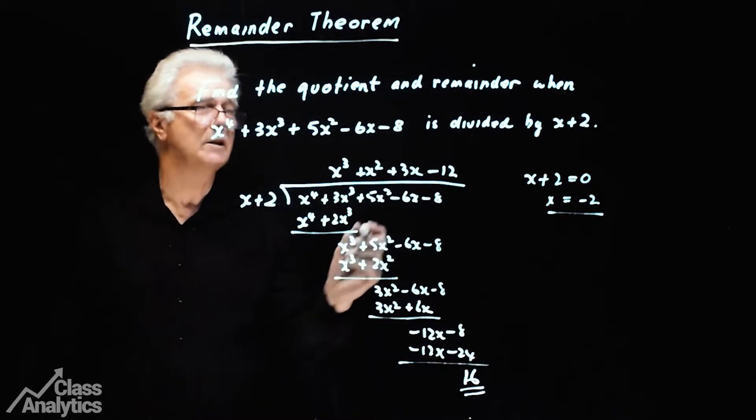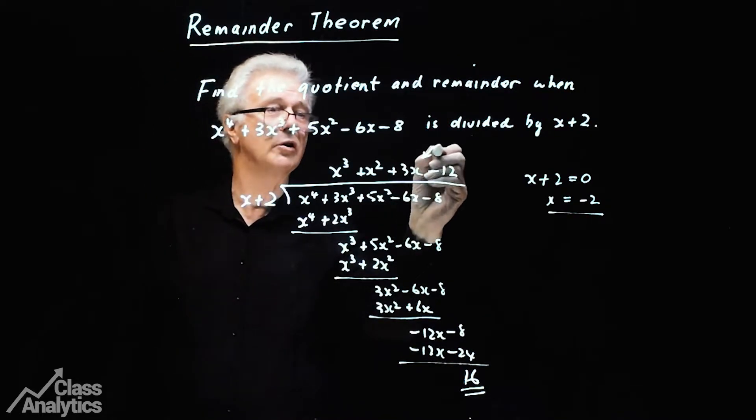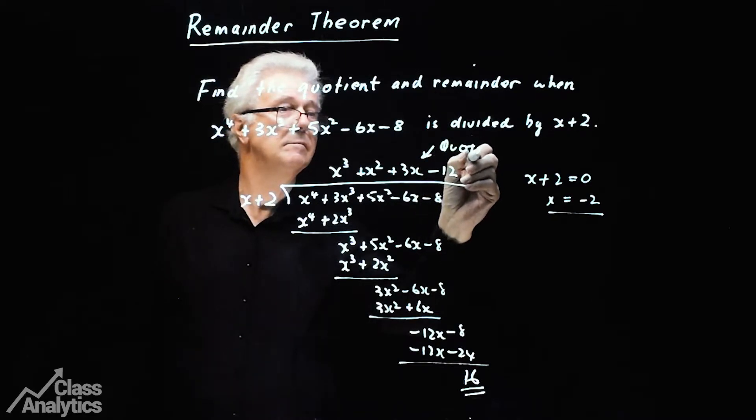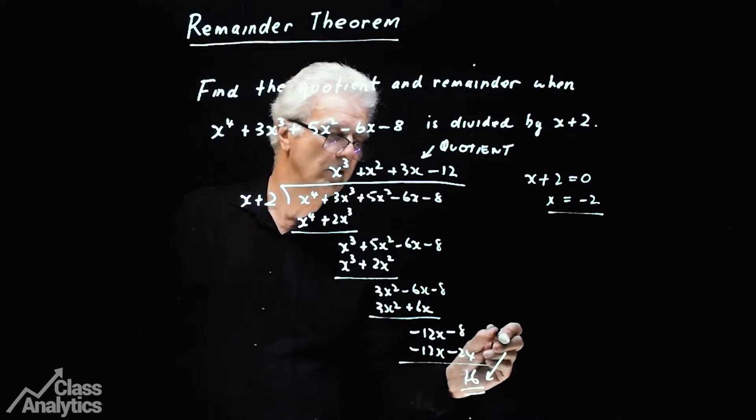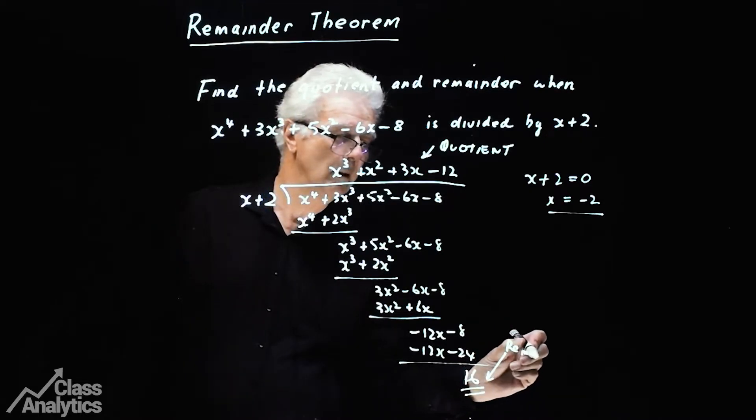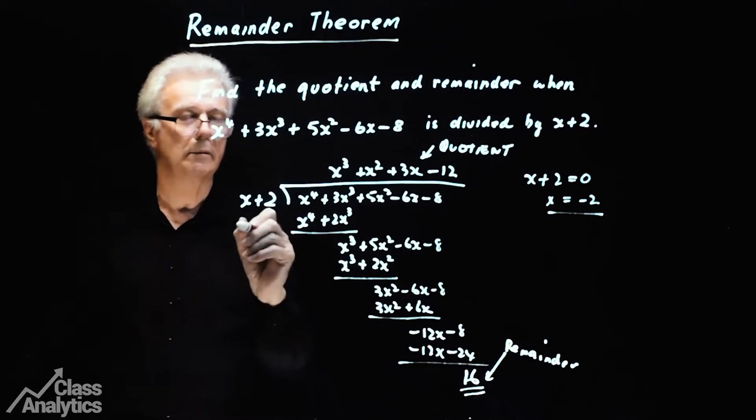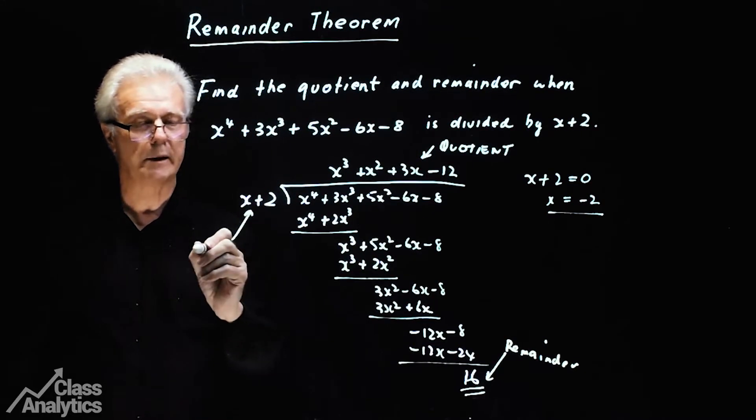Now just a few facts. This thing here, at the top, is the quotient. The quotient. This obviously, I told you, was the remainder. The remainder. These are the important ones. This one here is the divisor, obviously.